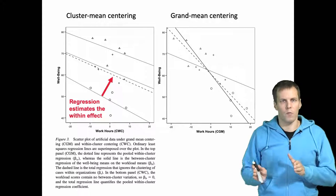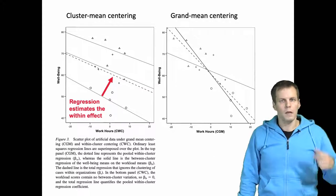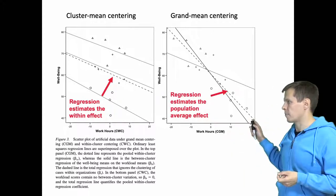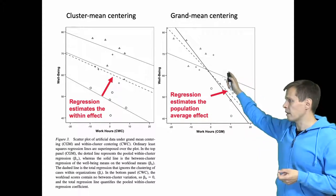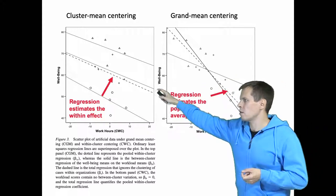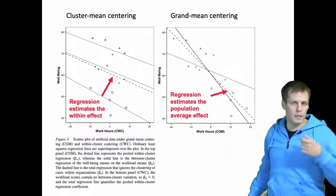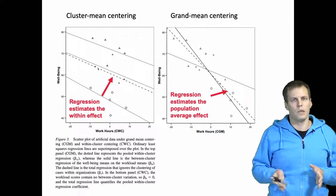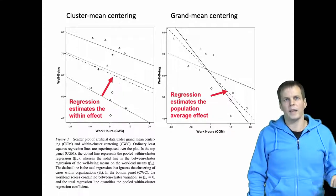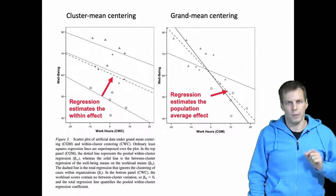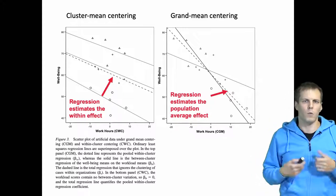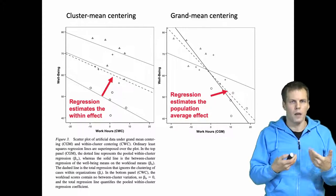Comparing regression estimation of cluster mean centered versus grand mean centered data: grand mean centering gives us the population average effect. The within effect is the same in both cases, but the solid line in the grand mean centering figure shows the between regression — the regression between cluster means. The population average effect is a weighted average of the within effect and the between effect, and it doesn't have a clear causal interpretation, making it typically difficult to justify.